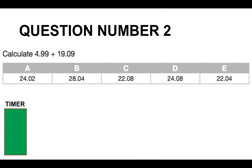Question number two. Calculate 4.99 plus 19.09. Choose from A, B, C, D or E. There's a timer going down.